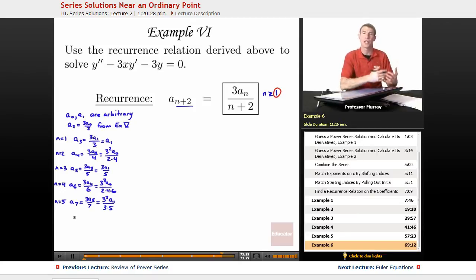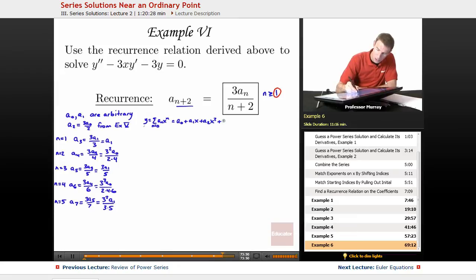So we're going to assemble all these coefficients and build ourselves a couple of series solutions. Y, our original guess for the solution was the sum of ANX to the N, starting at 0. A0, nothing we can do with that because it was arbitrary. A1X, nothing we can do with that.